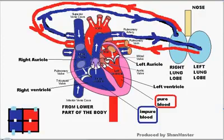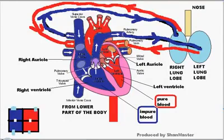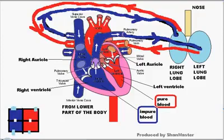From the left auricle to the left ventricle there is a mitral valve, also called bicuspid valve — 'bi' meaning two. The tricuspid valve — 'tri' meaning three — is between the right auricle and right ventricle. From the aorta, which exits the left ventricle, it curves and goes to the right arm, left arm, and brain, and then down to the lower part of the body.